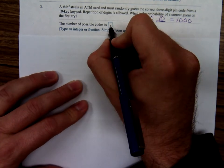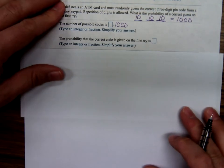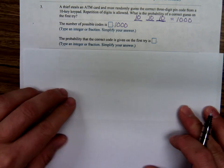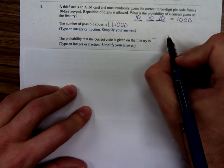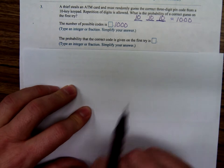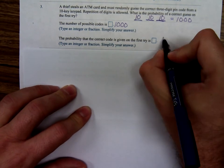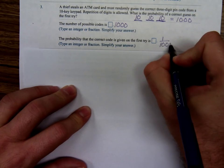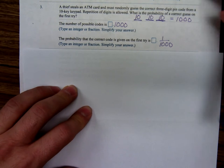So that goes right here, one thousand. What's the probability that the correct code is given on the first try? Well, what's the probability of them randomly choosing that one correct code out of a thousand? Well, one out of a thousand. That was a short one.